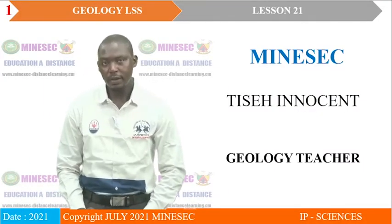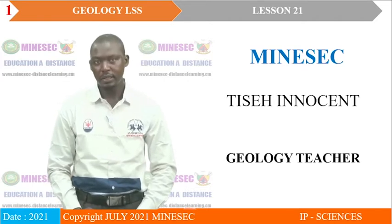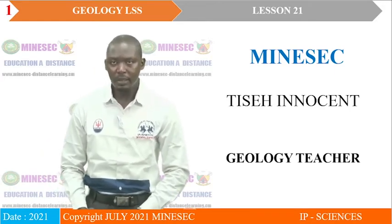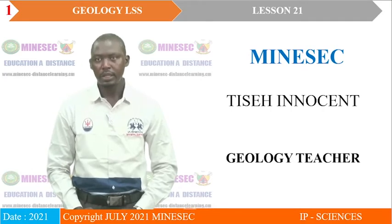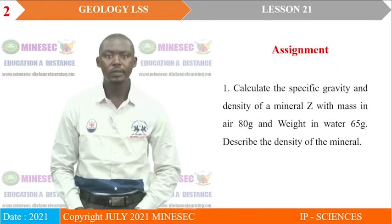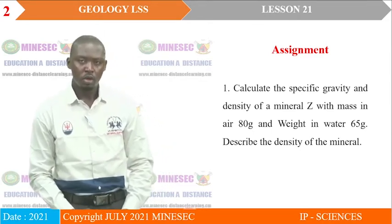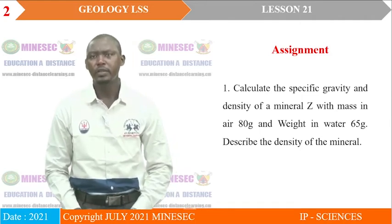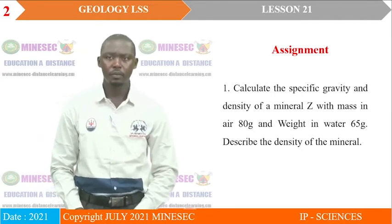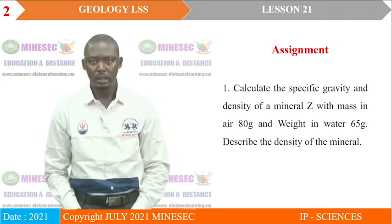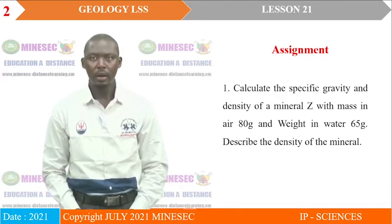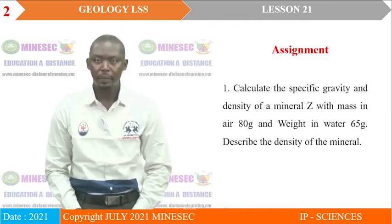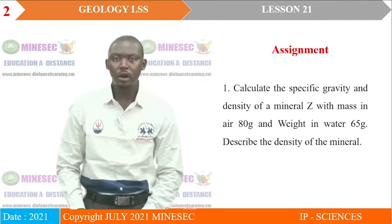Welcome to lesson 21 of your distance learning session with Thise Innocent. Before we examine lesson 21, there is a need to correct the assignment given during the previous lesson. We were asked to calculate the specific gravity of a certain mineral Z whose mass is 80 grams in air and 65 grams in water. We were also expected to describe in relative terms the density of that mineral.